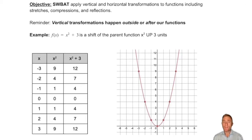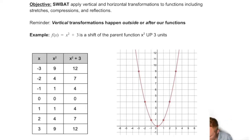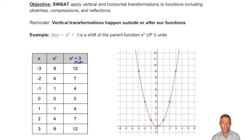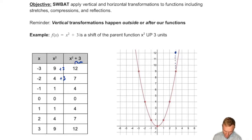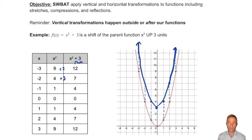Vertical transformations happen outside or after our functions. So if we have x squared plus 3, the plus 3 is happening after the x squared part — it's just applying to the y values. You take every output: negative 3 squared is 9, you add 3, there's 12. Negative 2 squared is 4, you add 3, and there's 7, and so on. You can see the same thing in the graph — you would take every single point and move it up 3 spaces. The key thing to remember is that this is a vertical transformation because we did the plus 3 part after the x squared part.